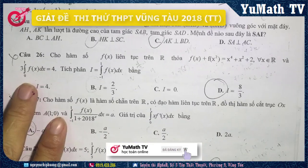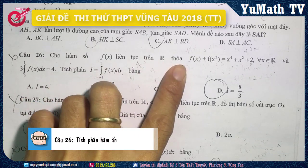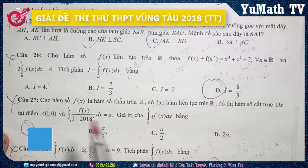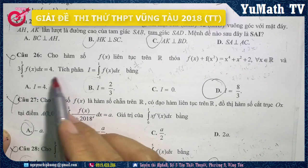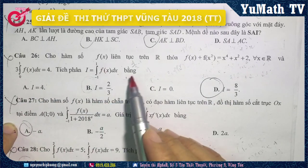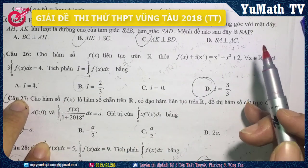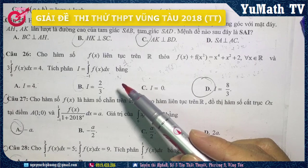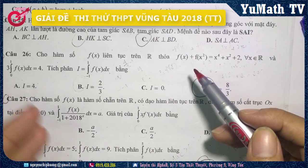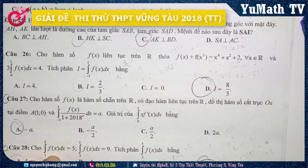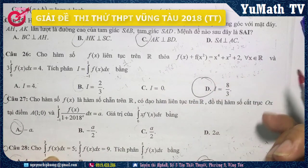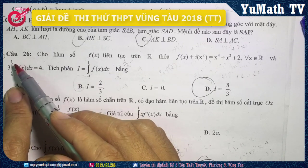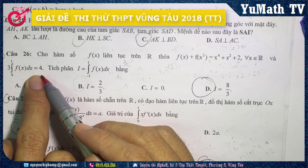Câu số 26: Cho hàm số f(x) liên tục trên ℝ, thỏa f(x) + f(x²) = x⁴ + x² + x với mọi x thuộc ℝ, và 3∫[0,1] f(x)dx = 4. Tính tích phân ∫[-1,1] f(x)dx. Đây là dạng tích phân hàm ẩn. Chú ý: người ta cho tích phân từ 0 đến 1, bắt tính từ -1 đến 1. Mình cần kiểm tra f(x) là hàm chẵn hay lẻ.